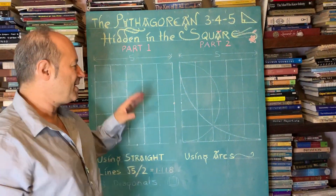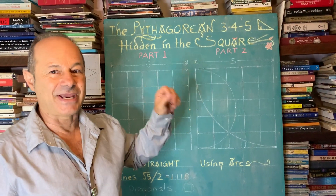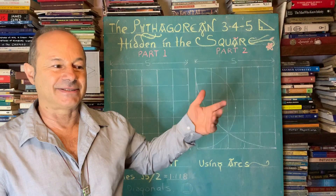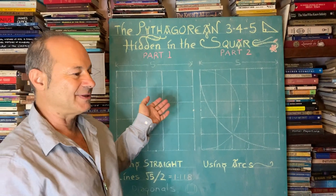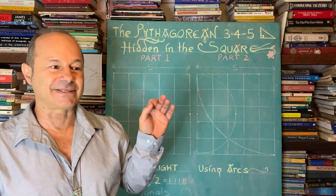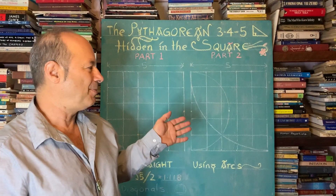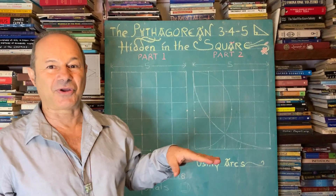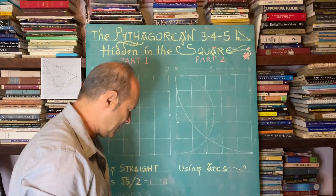This is actually available on the internet and other authors are working with it, but the one I'm going to show you in part two is a secret — it doesn't exist on the internet or in any book, and it's done with curves. So let's just get this one done first.